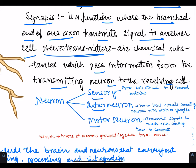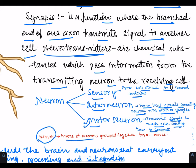What are sensory neurons? From external stimuli to internal conditions, they will transmit the information. An interneuron will transfer information from local circuits — they form local circuits connecting neurons in the brain or ganglia. Motor neurons transmit signals to muscle cells, causing them to contract. What are nerves? Axons of neurons grouped together form nerves.